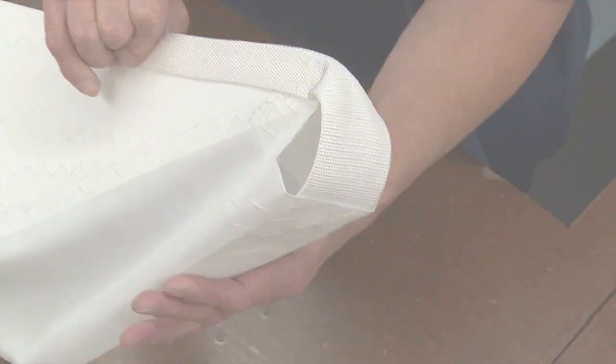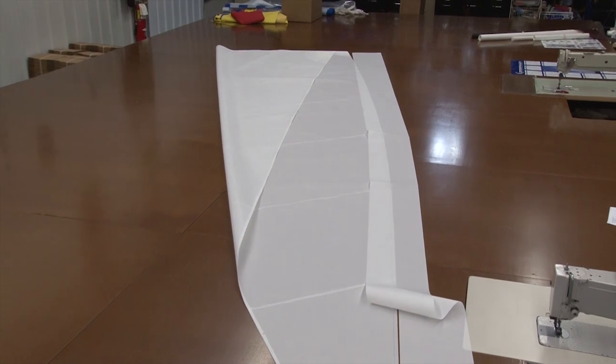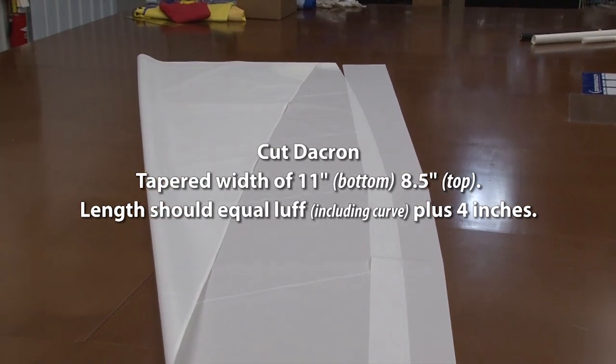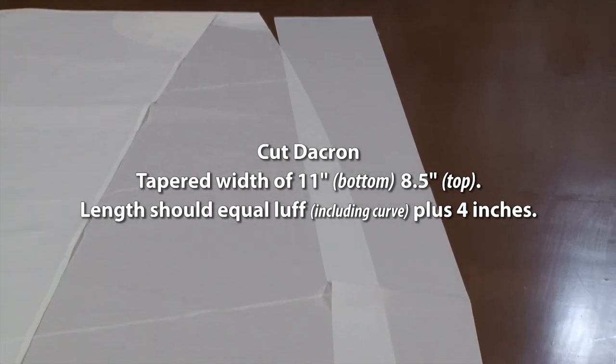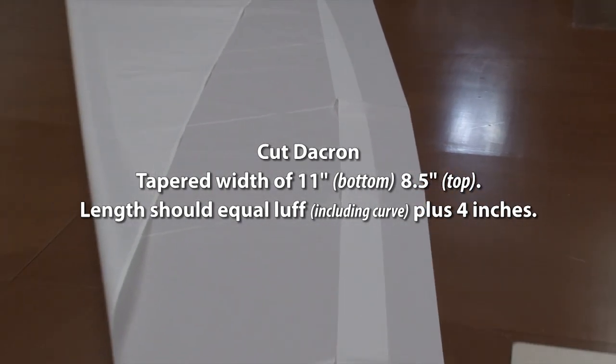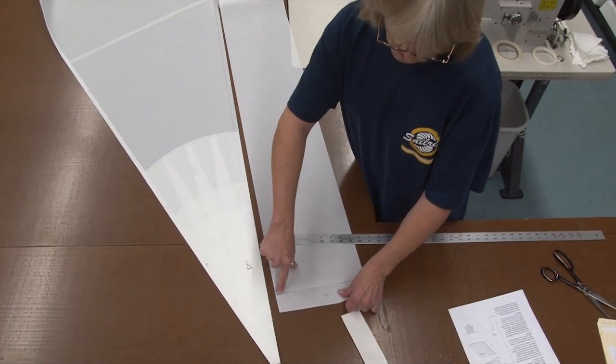Since this is a sail kit, the sleeve has been cut via the plotter. This is a tapered sleeve that measures approximately 11 inches at the bottom and 9 inches at the top. For most Force 5 and laser sails, it's usually 11 inches at the bottom and 8.5 at the top. Let's get started and show you how to build this.